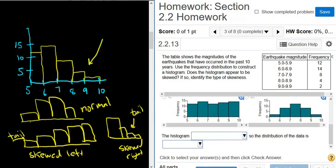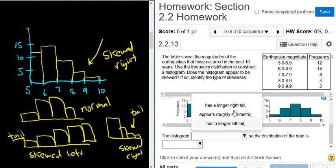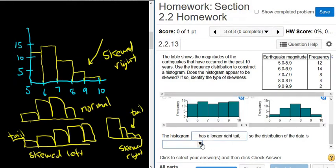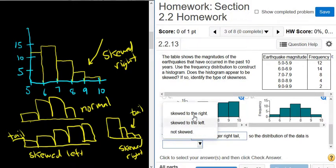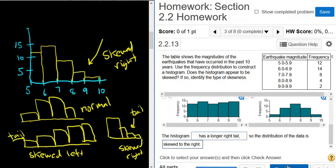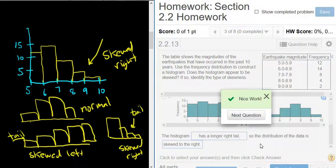So in this case, the tail is to the right, so it's going to be skewed right. So it's skewed wherever the tail is, okay? So in this case, the histogram has a longer right tail, right? It has a longer right tail, so the distribution of the data is skewed to the right. Let's try it. And that's it. I hope that made sense.